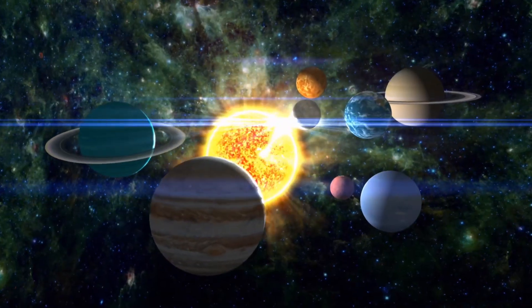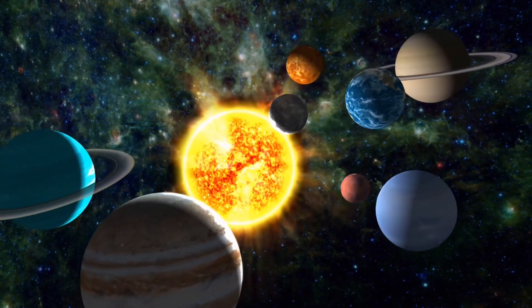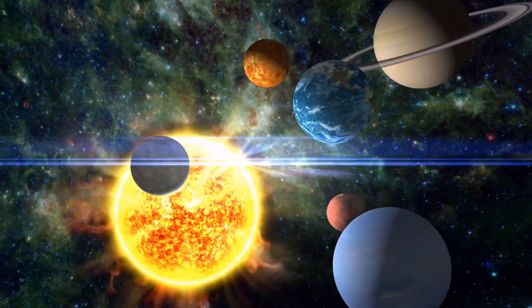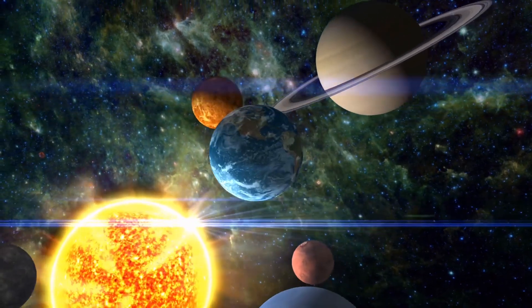The eight planets in our solar system are Mercury, Venus, Earth, Mars, Jupiter, Saturn, Uranus and Neptune.